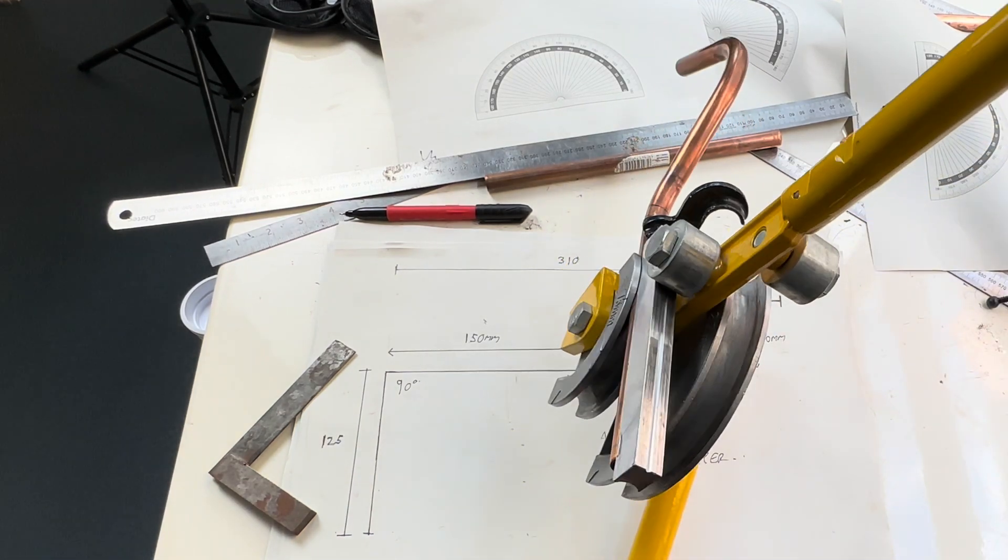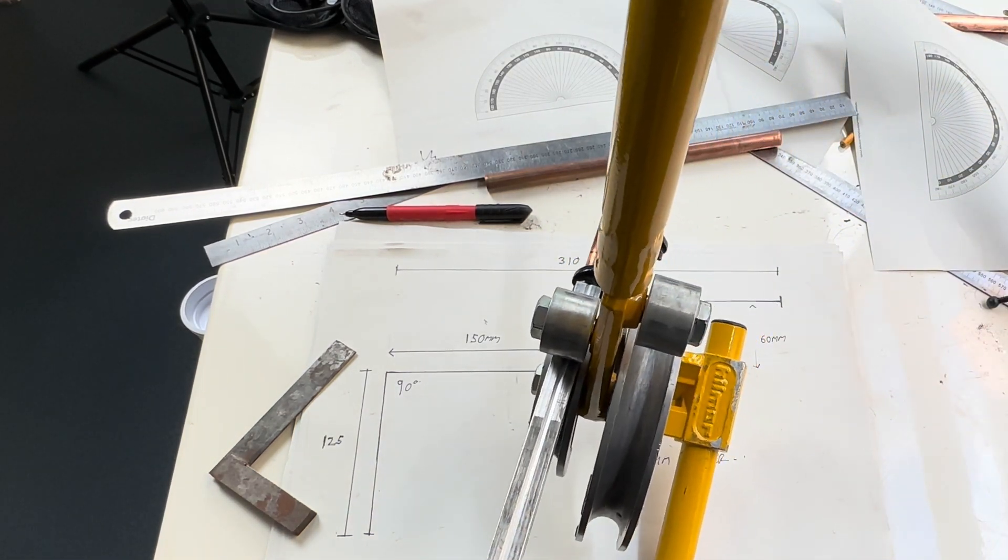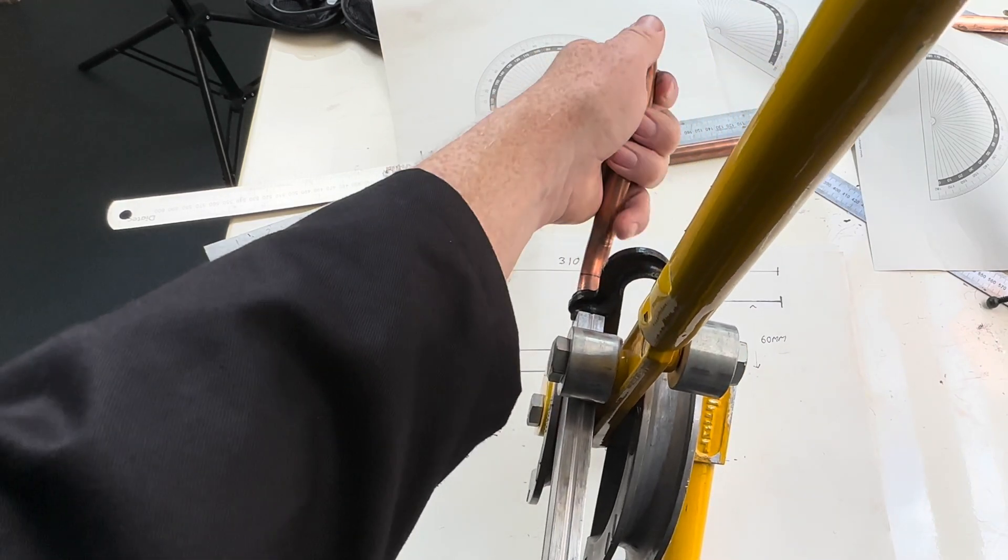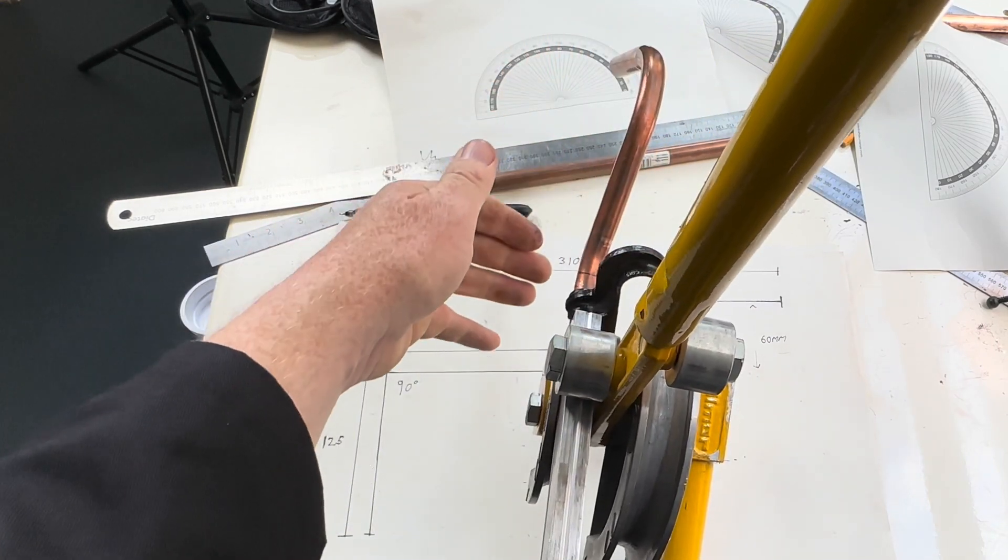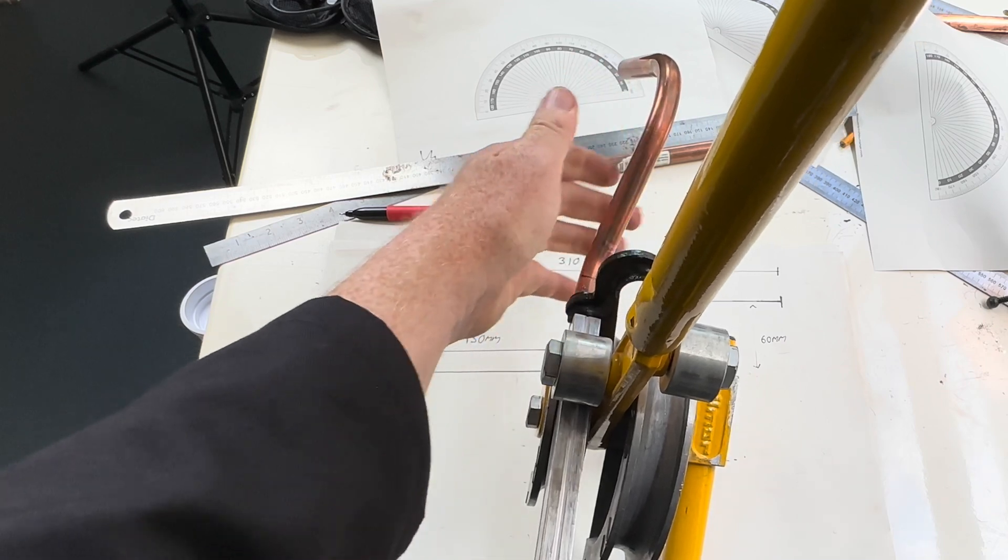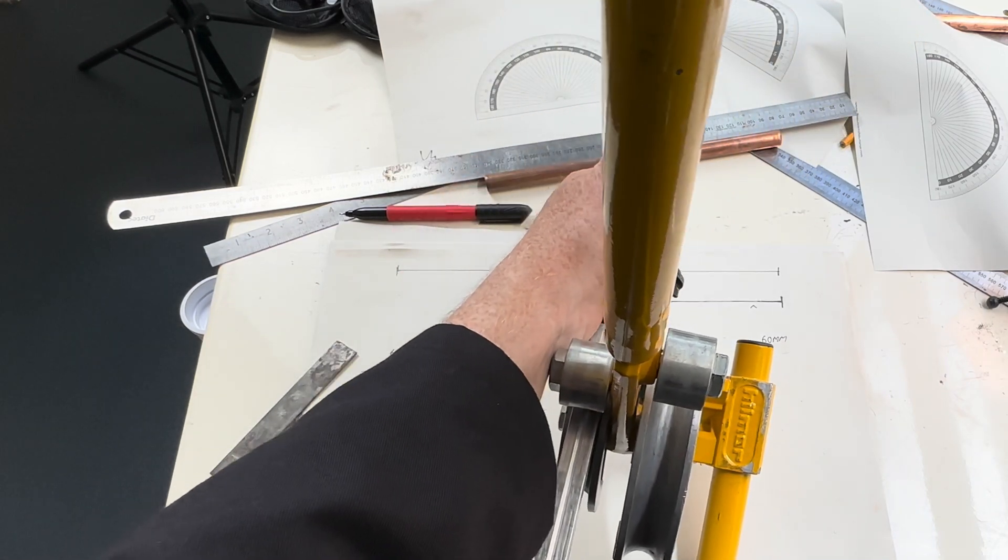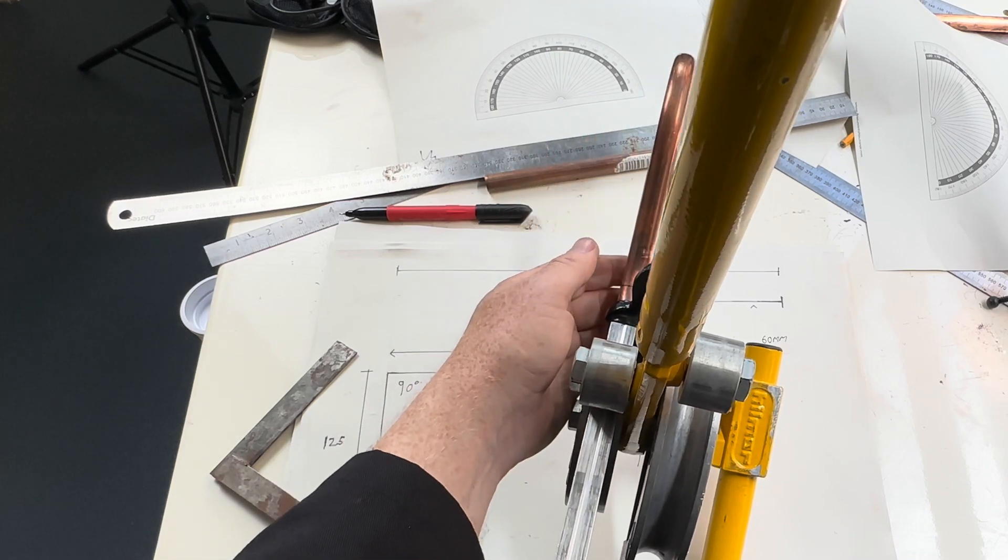We are now ready. We need to bend the pipe 45 degrees. But before we do this, we need to make sure that everything is in a line. As an example, that's not in line.